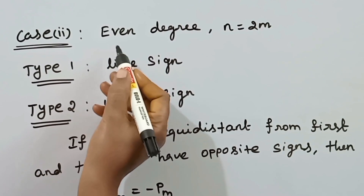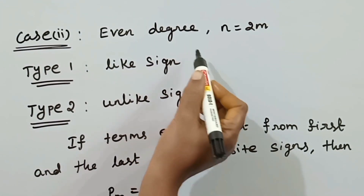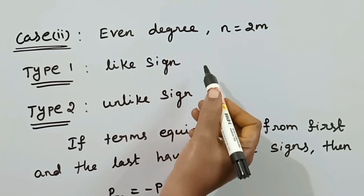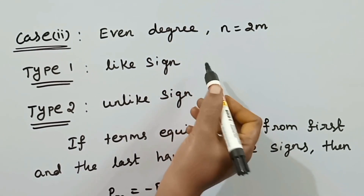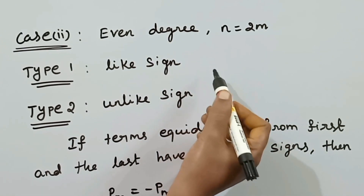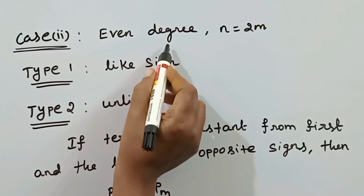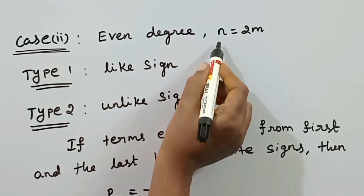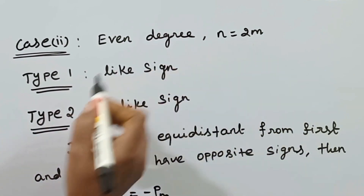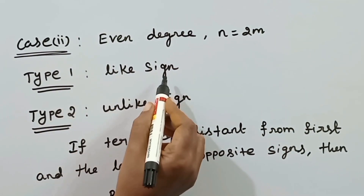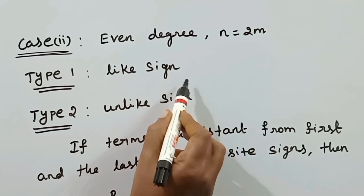Now let's discuss even degree reciprocal equations. For even degree, n equals 2m. Type 1 is like sign: even degree like sign is the standard form. Type 2 is unlike sign: even degree unlike sign, where terms equidistant from first and last have opposite signs.